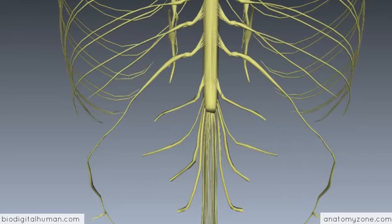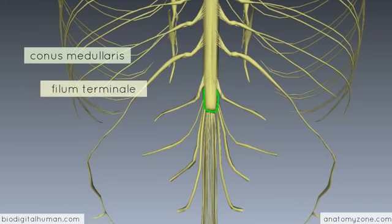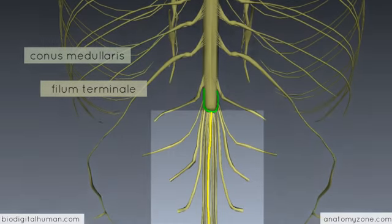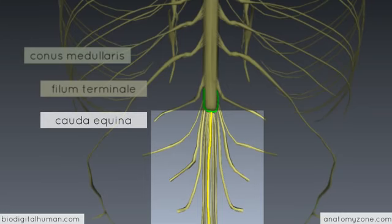Coming back to the 3D model at the distal end of the spinal cord, you can see it terminates in a conical structure highlighted in green, known as the conus medullaris. Extending from the tip of the conus medullaris is a strand of connective tissue — drawn in yellow — called the filum terminale, which attaches the conus medullaris to the first coccygeal vertebra. The lumbar and sacral spinal nerves hang down from the conus medullaris, forming an arrangement that looks like a horse's tail, known in Latin as the cauda equina.